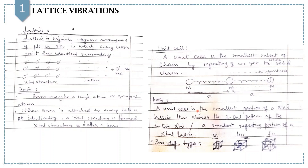What is a unit cell? A unit cell is the smallest portion of a crystal lattice that shows the three-dimensional pattern of the entire crystal. It means the smallest repeating portion of a crystal lattice is called a unit cell. We have three different types of unit cell: simple cubic, body-centered cubic, and face-centered cubic.